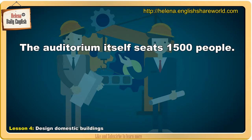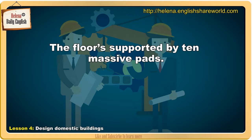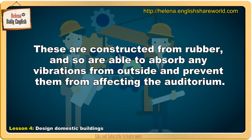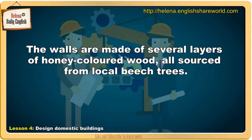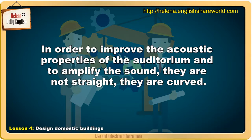The auditorium itself seats 1,500 people. The floor is supported by ten massive pads. These are constructed from rubber and so are able to absorb any vibrations from outside and prevent them from affecting the auditorium. The walls are made of several layers of honey-coloured wood, all sourced from local beech trees.